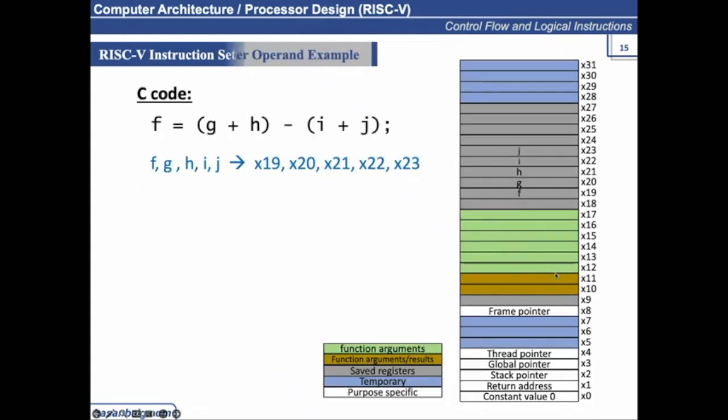So if we take the same example again, which we have just discussed, assume that F corresponds to X19, G corresponds to X20, and all the way until J, which corresponds to X23. So the compiled RISC-V code for the first instruction. What would be the first instruction? Add.